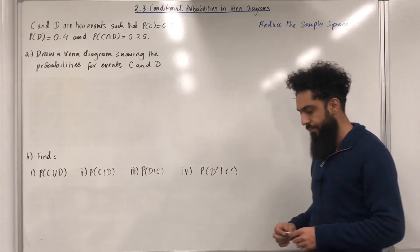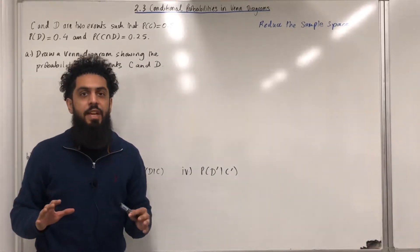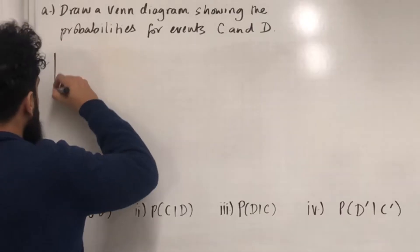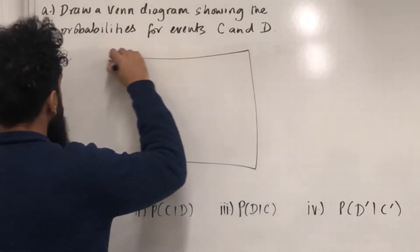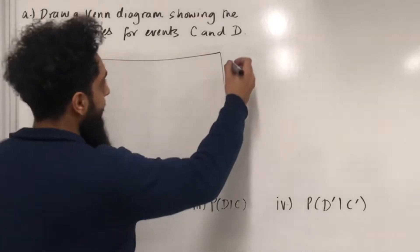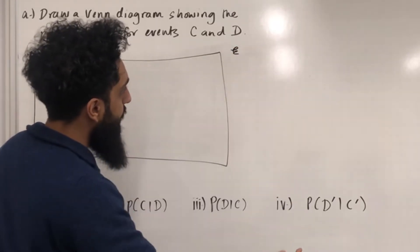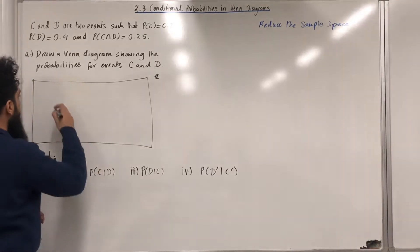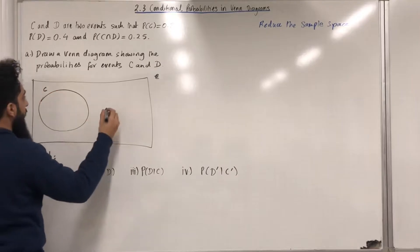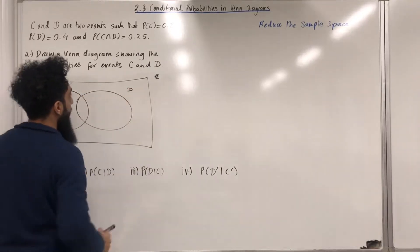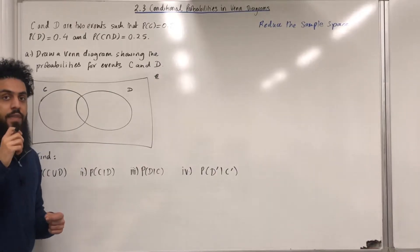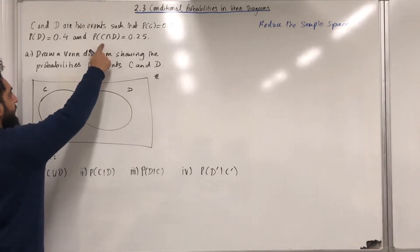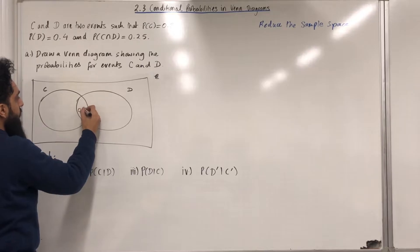We need to draw a Venn diagram. The very first step is to draw a rectangle representing the sample space. The notation we use for the sample space looks like an E. The next step is to draw event C and event D inside the sample space. When we fill in an event diagram, we start off with the intersection. Probability C intersect D is equal to 0.25, so I label 0.25 in the intersection.